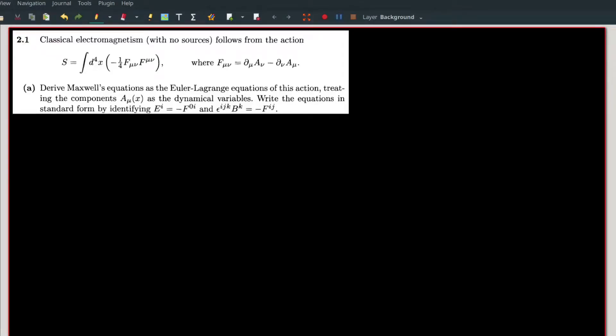Hello fellow students, in this video I discuss the solution of problem 2.1a of Peskin and Schroeder's introduction to quantum field theory. In the problem we are given the action of classical electromagnetism in terms of f_μν where f_μν is given in terms of derivatives of A, the four-vector of electromagnetic potential. We are asked to derive Maxwell's equations from this action.